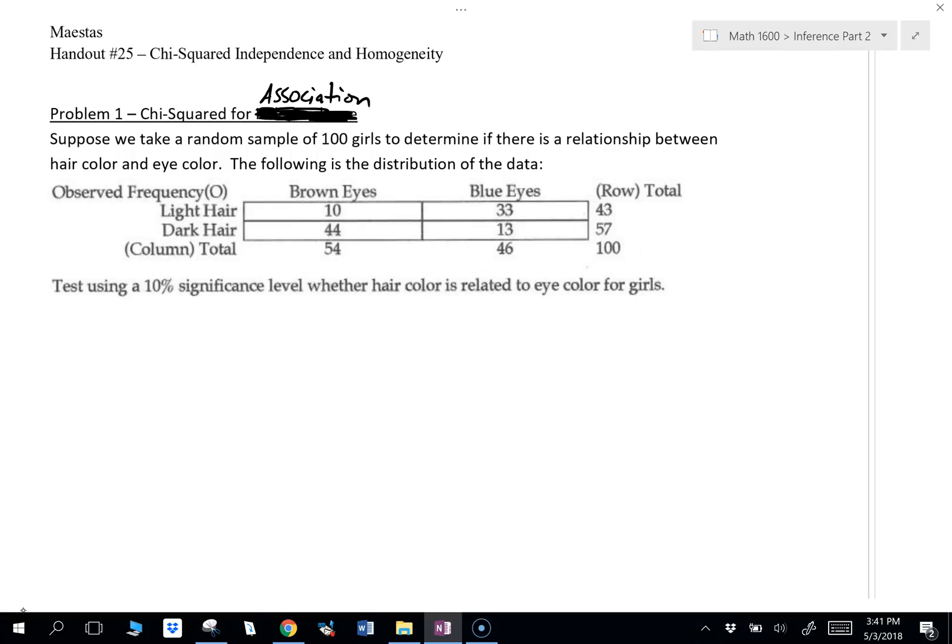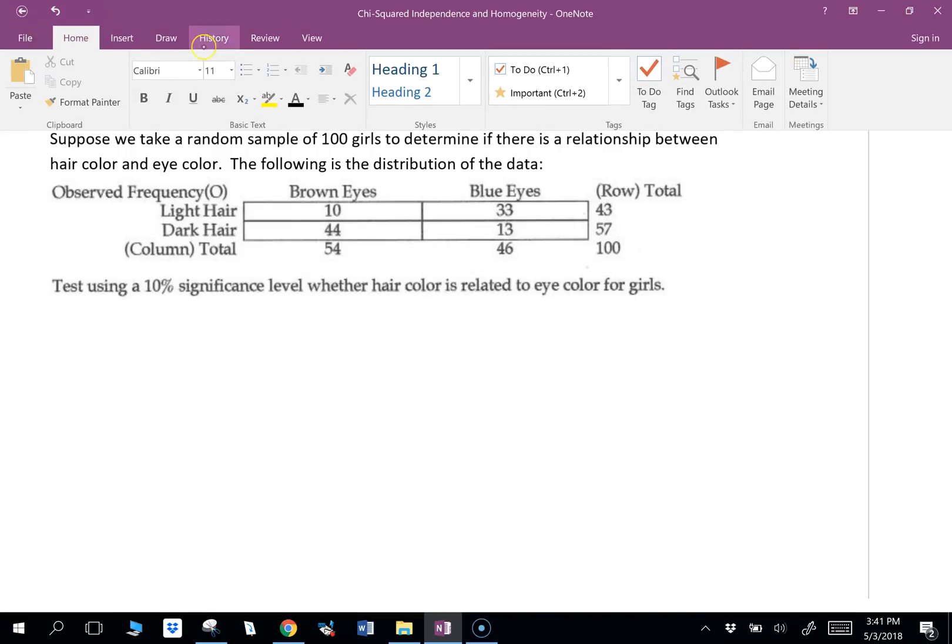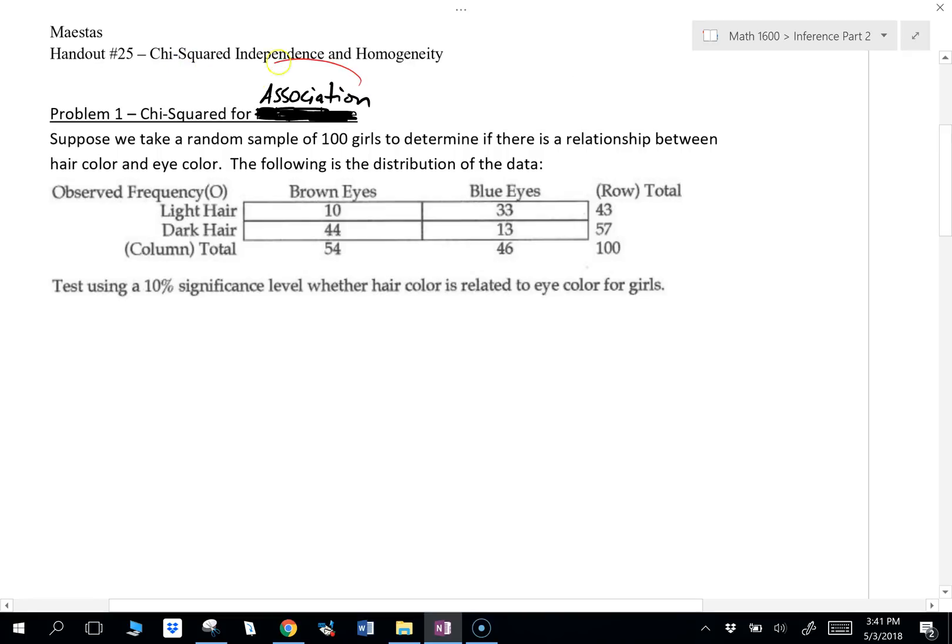So right away, we know the key word to know that we're using a chi-square test for association. The key words we're looking for are, we're looking for association. We see that word, we know we're using a chi-square test for association.